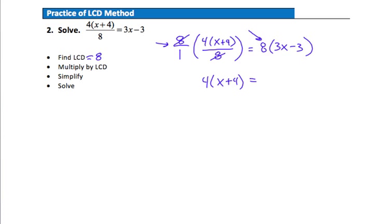On the right side now, nothing to divide out, so I'm just going to simply distribute the 8, which is going to give me 24x minus 24. Now I've got a normal equation. Fractions are cleared out, so now I'm pretty much home free. So simplifying the left side, I'll distribute the 4. That's going to give me 4x plus 16.